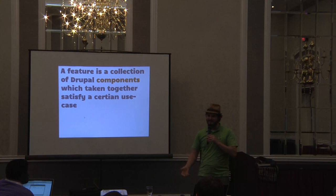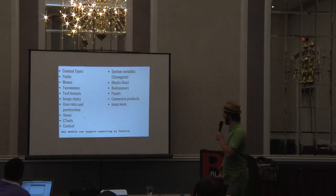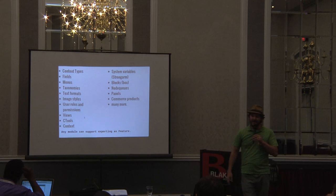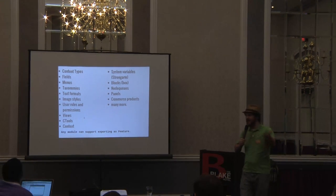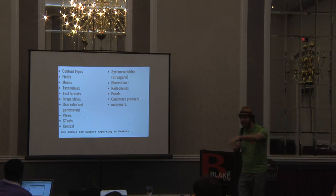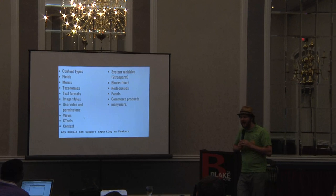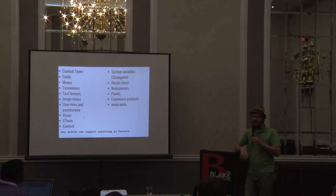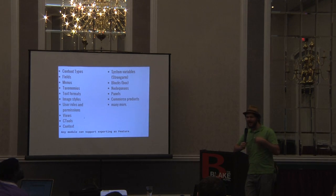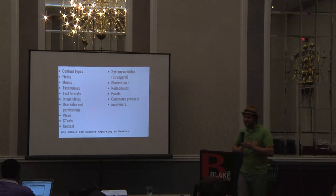So what can I put inside my features? All of the stuff on the left hand side is what you can put in out of the box. Turn on features, you can start exporting this stuff, no problem. On the right hand side are contributions to the features module. With system variables, we use the strong arm module. I don't really use blocks anymore — I like the boxes module because it has machine names and inline editing, so I use the box module for exporting blocks.